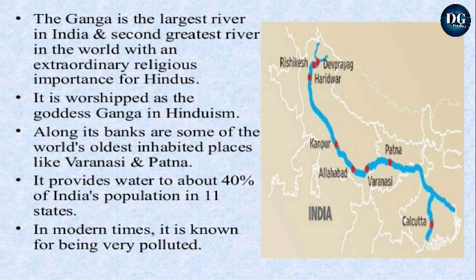The Ganga is the largest river in India and the second greatest river in the world, with extraordinary religious importance for Hindus. It is worshipped as a goddess in Hinduism. Along its banks are some of the world's oldest inhabited places like Varanasi and Patna. It provides water to 20 to 40 percent of India's population in 11 states. In modern times, it is very well known for being polluted.